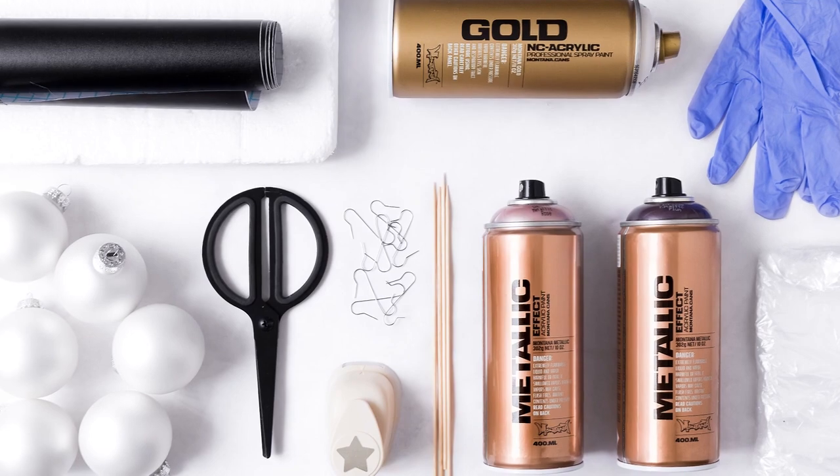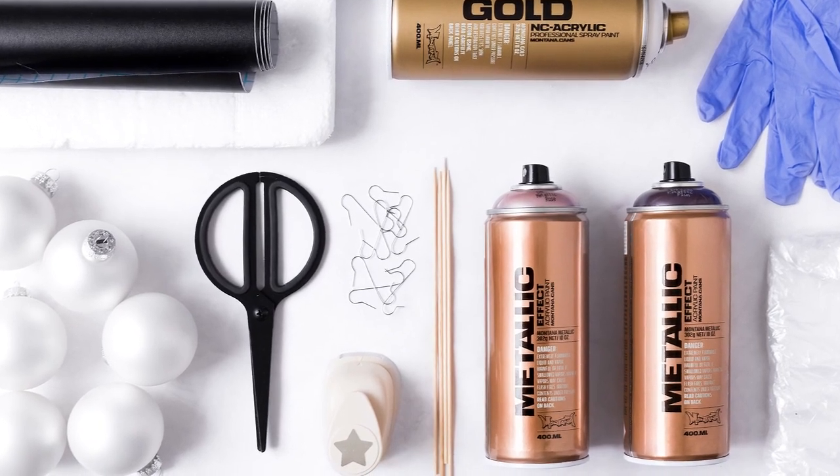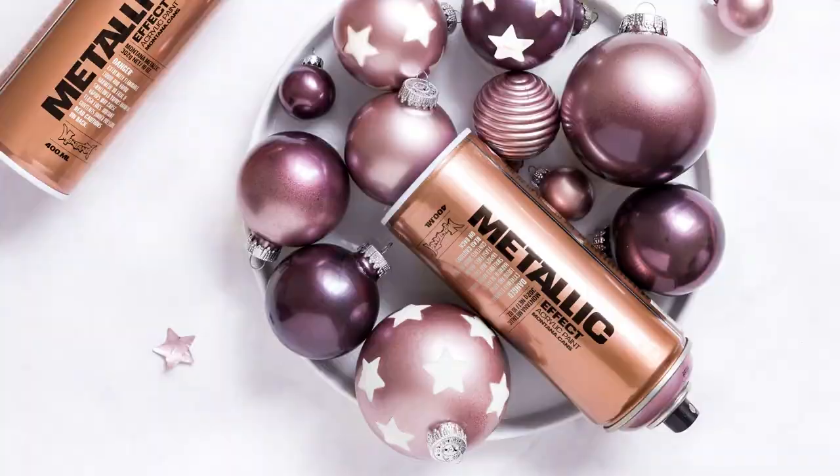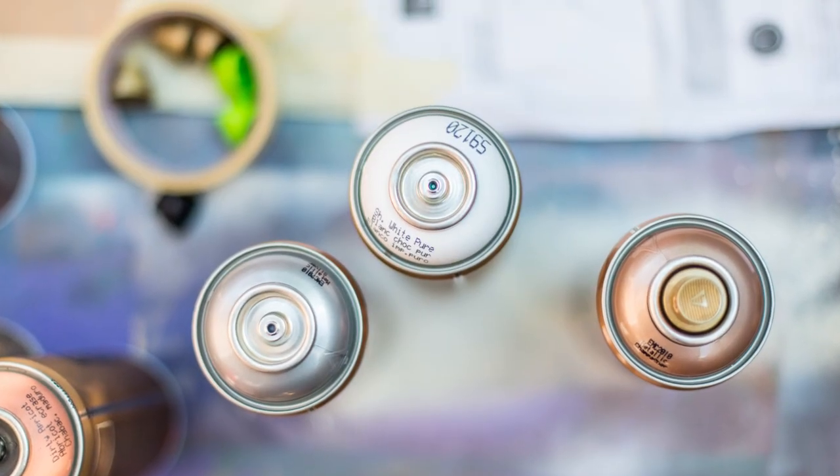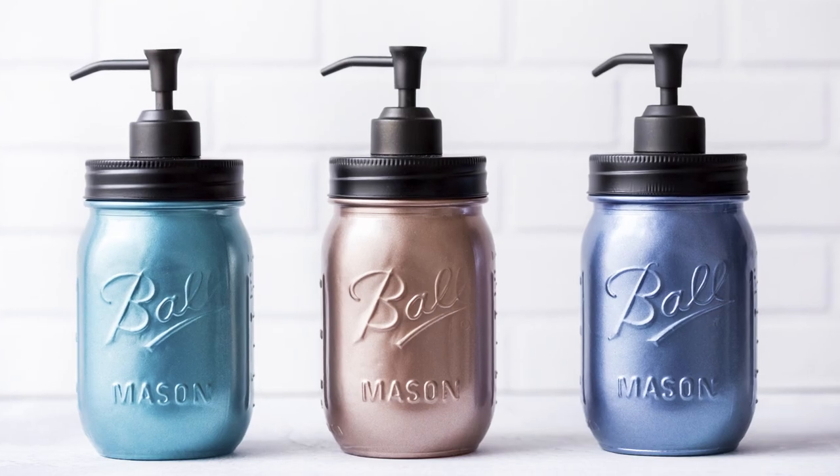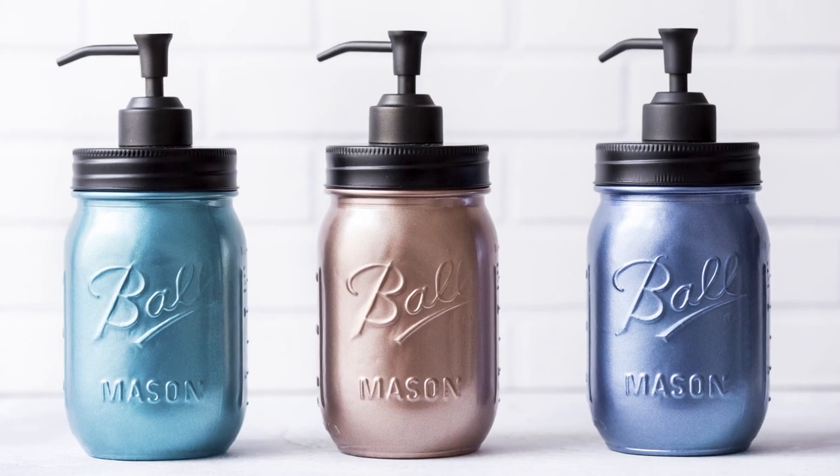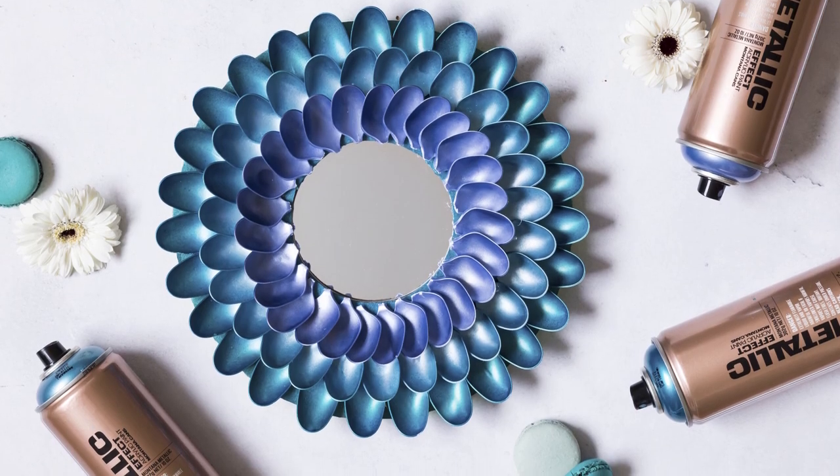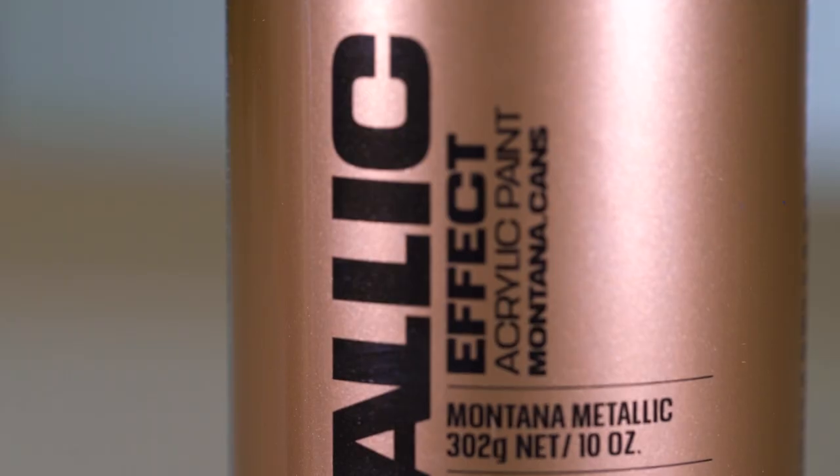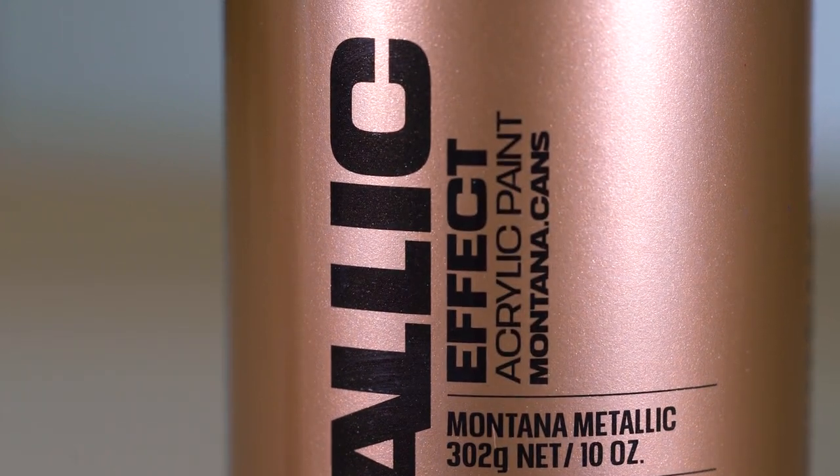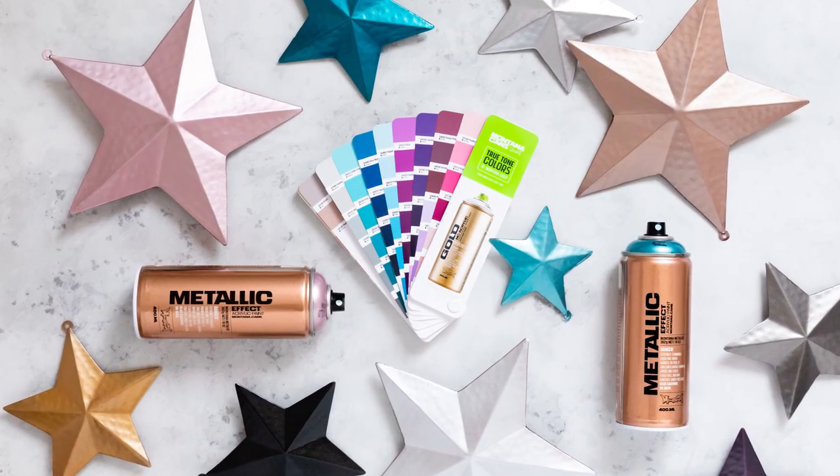Metallic Effect sprays can be combined with Montana Gold and Montana Black cans, as well as Montana acrylic markers. The Montana Metallic Effect sprays bring state-of-the-art paint technology to traditional metallic effect colors. They can add a metallic flare to any creative or artistic project on many substrates.